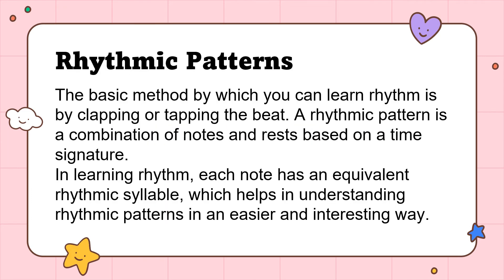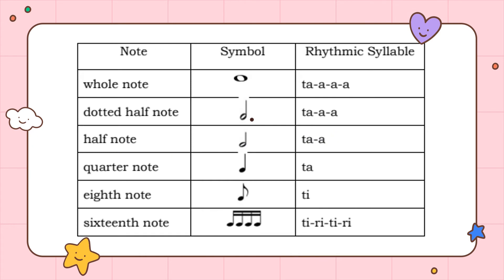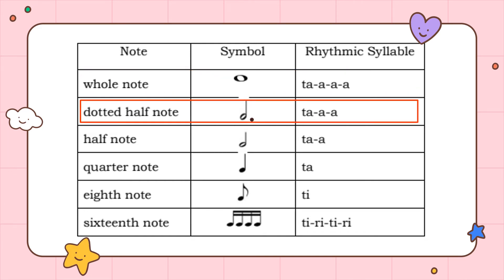In rhythmic patterns, the basic method by which you can learn rhythm is by clapping or tapping the beat. A rhythmic pattern is a combination of notes and rests based on a time signature. Each note has an equivalent rhythmic syllable, which helps in understanding rhythmic patterns in an easier and more interesting way. The whole note's rhythmic syllable is TAA-AA. The dotted half note's rhythmic syllable is TAA-A.